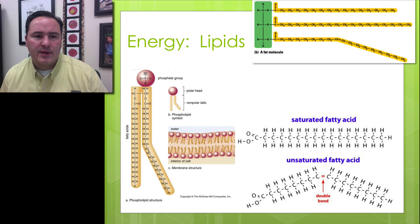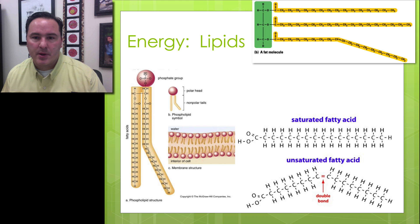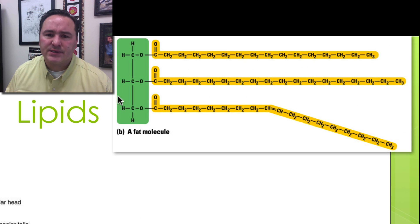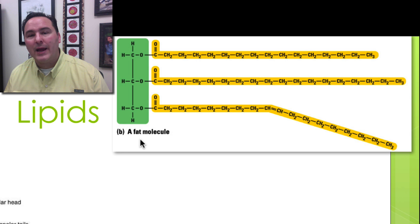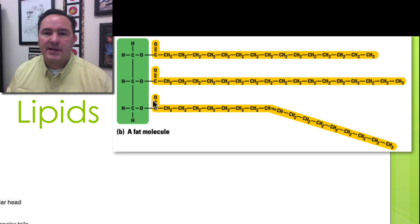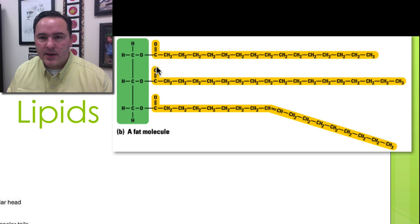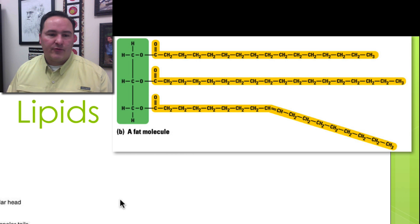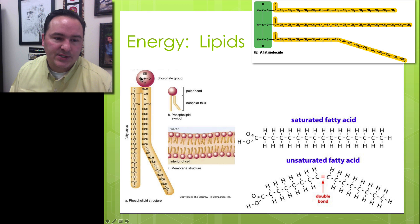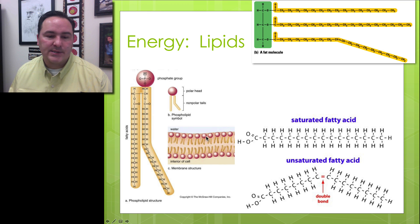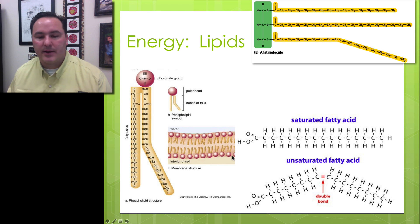The next energy molecules are the lipids. Here's a fat molecule, or triglyceride — it has a glycerol head and three fatty acids coming off it, hence triglyceride. Triglycerides can also be attached to a phosphate group, which is what makes up the phospholipid membrane structure we've talked about before.